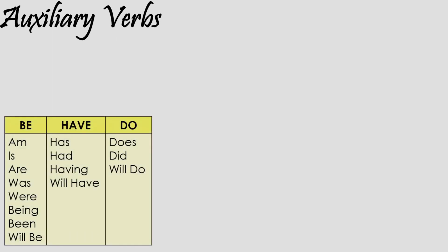Auxiliary verbs are a little more subtle. They might not jump out at you in a sentence, but they are still verbs nonetheless. Ready for some heavy grammar? There are only three auxiliary verbs in the English language: be, do, and have, along with the different tenses and versions of these words.